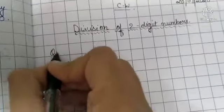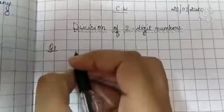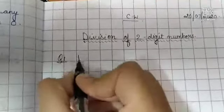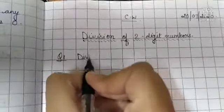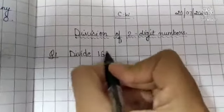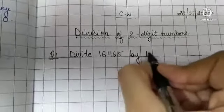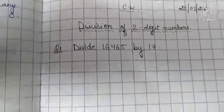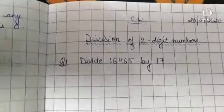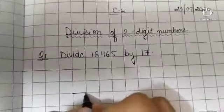Write down question 1. Divide 16465 by 17. Done? Okay, let's solve this.